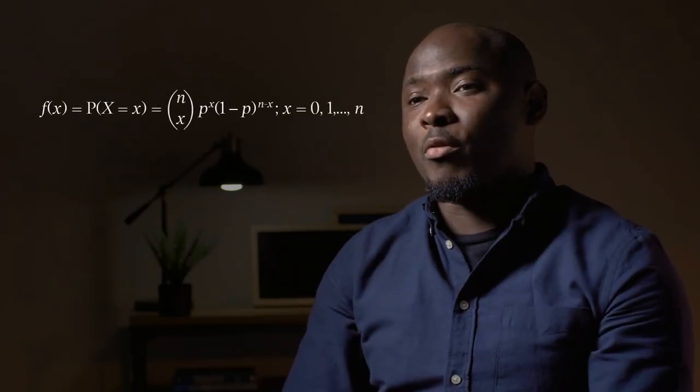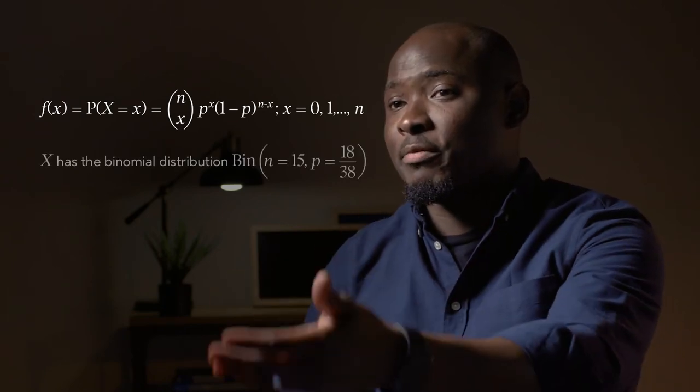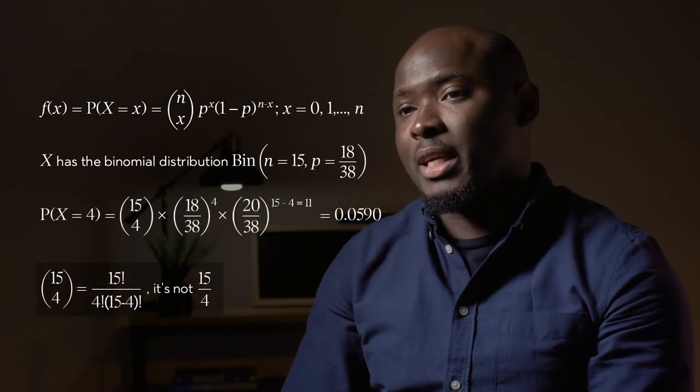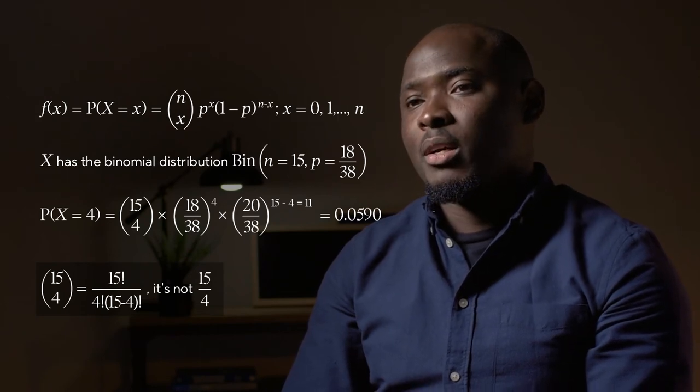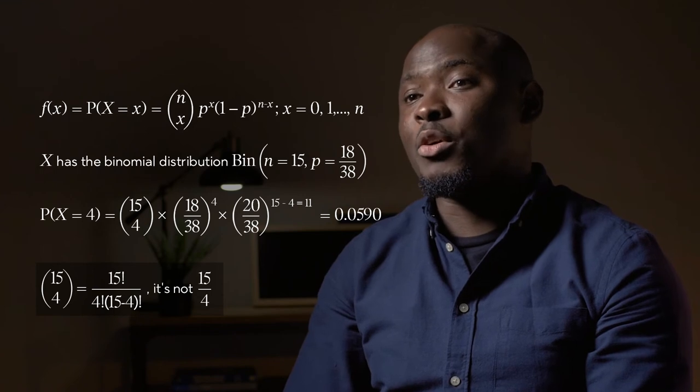Now we can take n equal to 15 trials or even more and compute probabilities quite easily. For example, what is the probability of having exactly four successes in 15 trials? We plug it into the binomial formula where n equals 15 and x equals 4, giving us approximately 0.0590. So now we know what the binomial distribution is and what the binomial formula is, and we can compute exact probabilities.